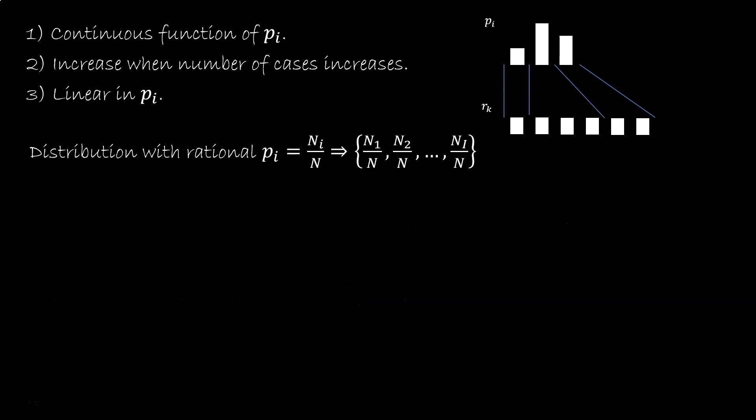So now we know the functional form of the variability of a uniform distribution. Neat. Let's consider another case. We have a distribution where all the PIs are rational, all with the same numerator. We can imagine expanding each case with a uniform distribution of ni cases. So in the example, first case is 1/6, we expand it with a uniform distribution over 1 case. The second case is 3/6, we expand it using a uniform distribution over 3 cases. The third case is 2/6, and we expand it over 2 cases.